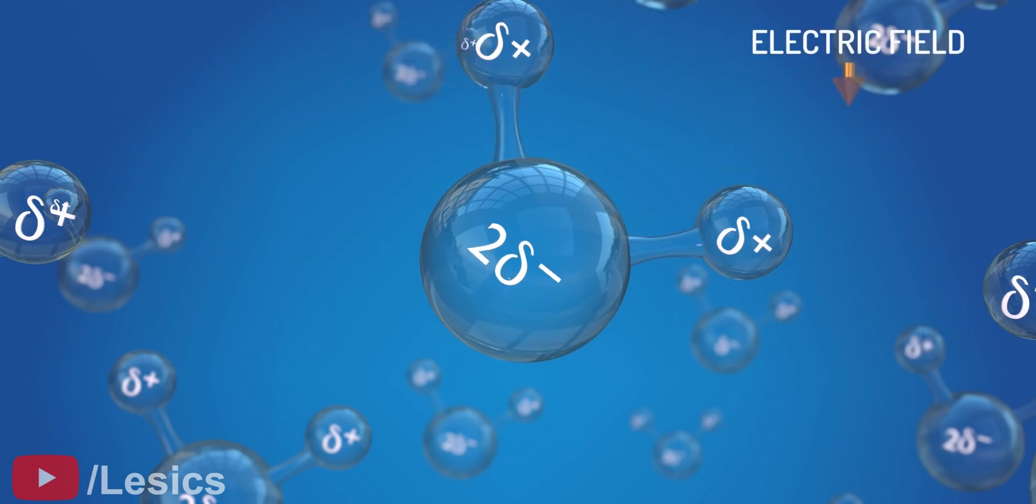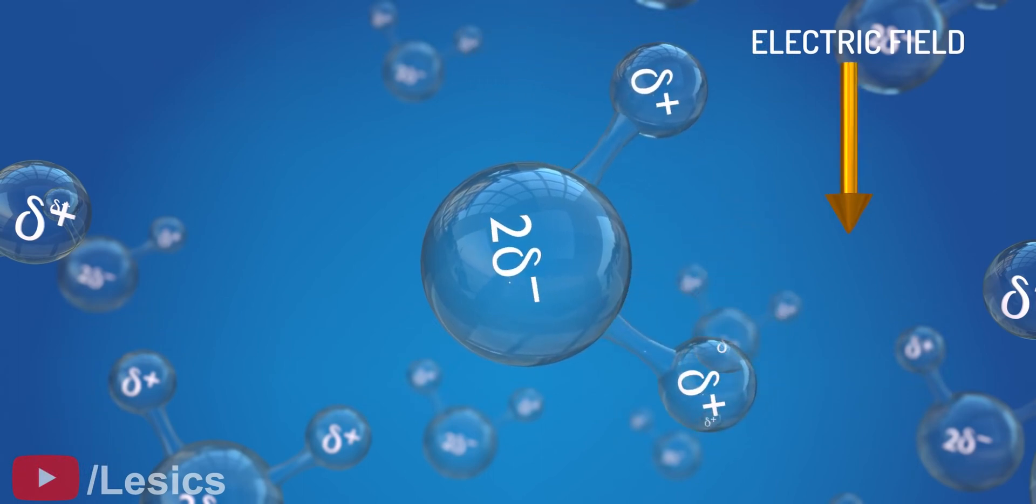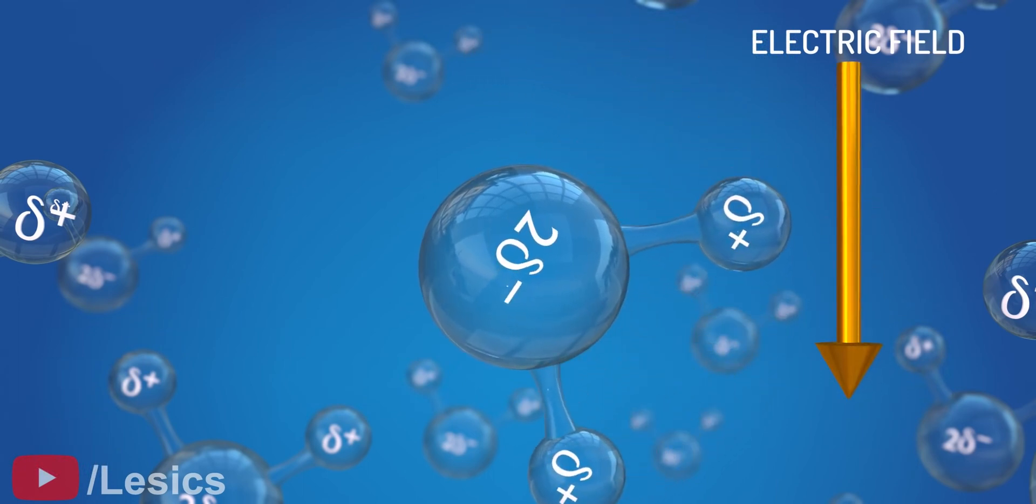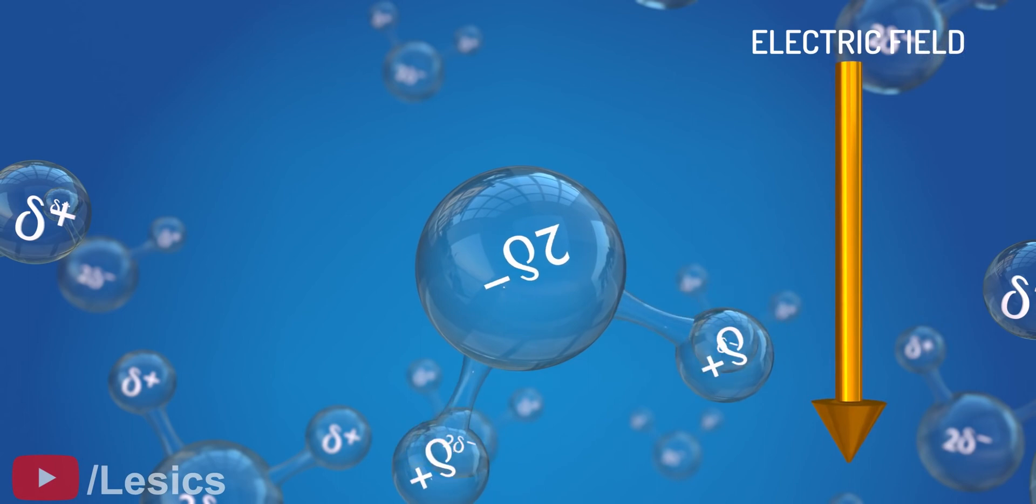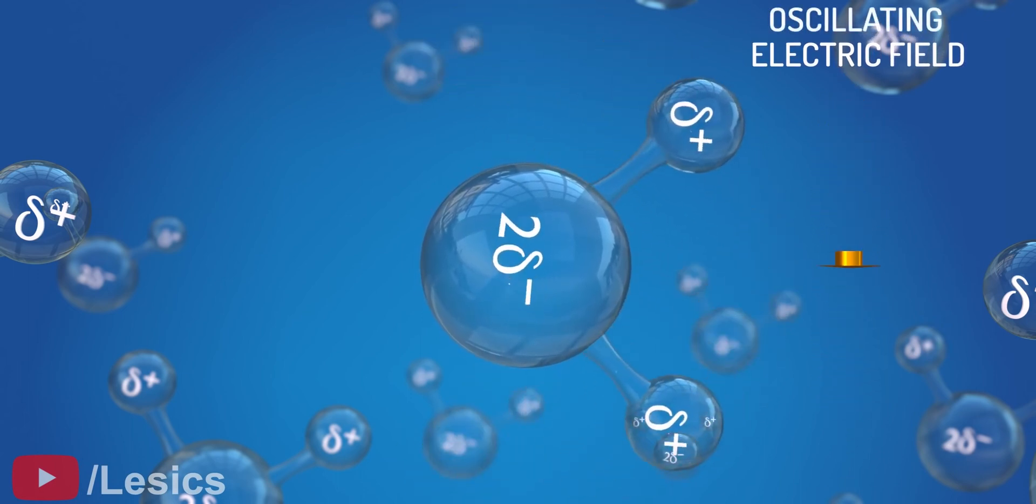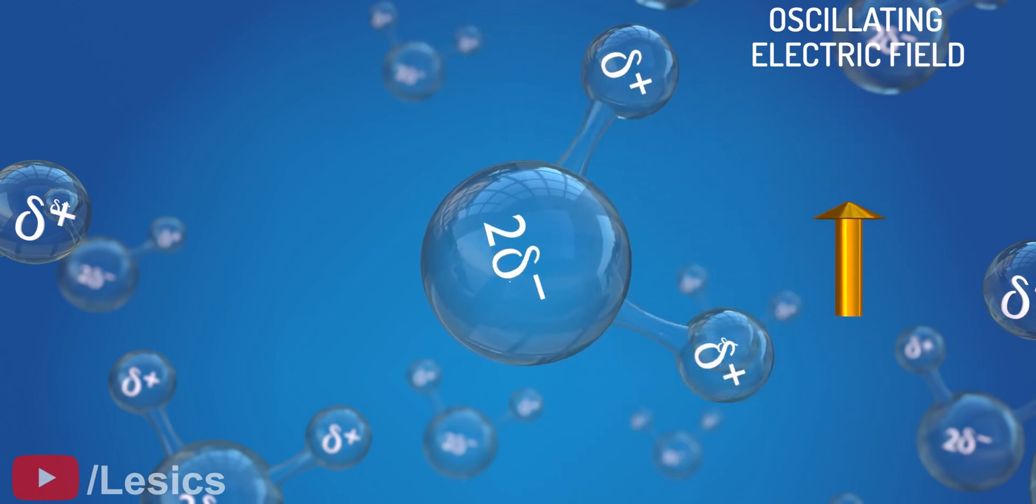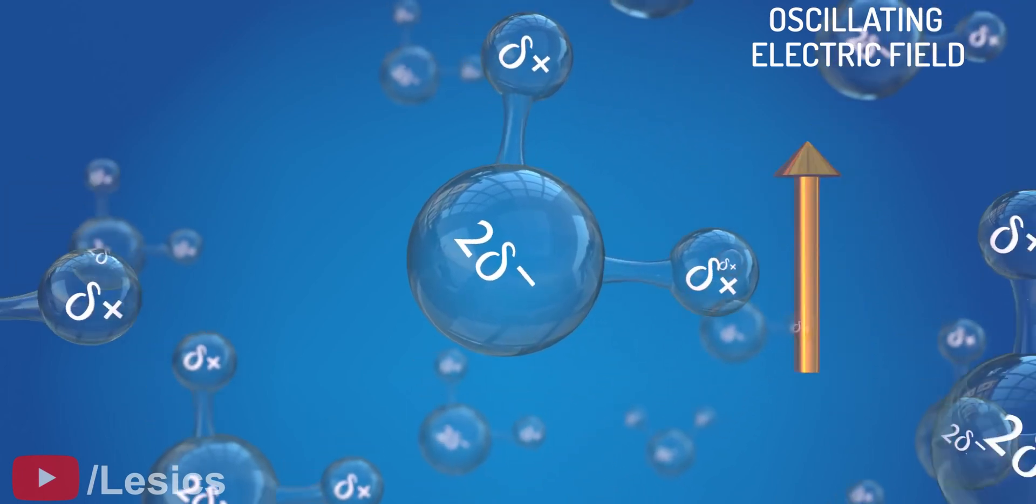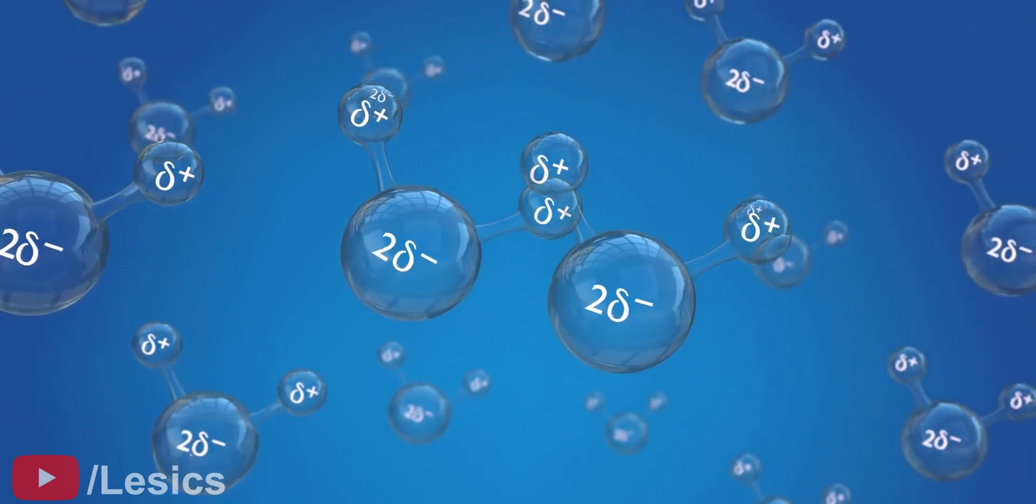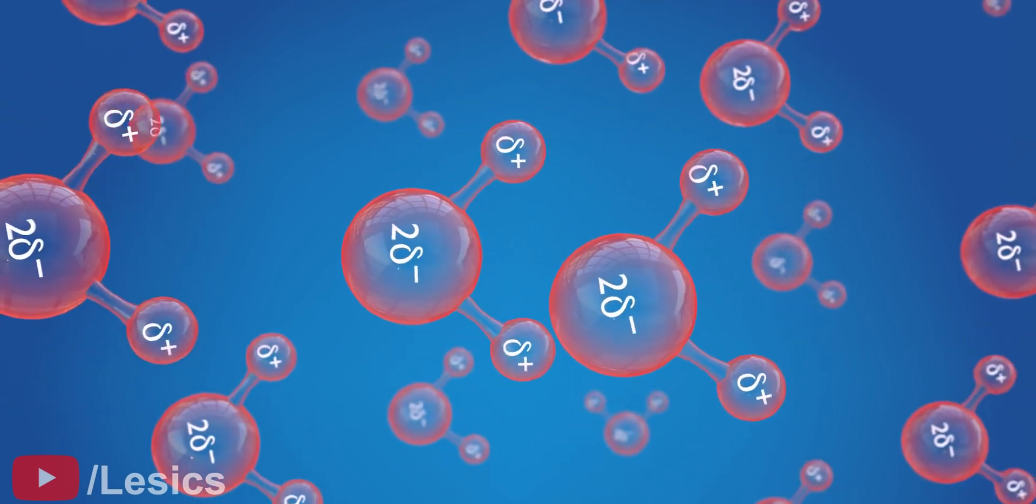When an electric field is applied to the water molecule, it starts to rotate due to the torque produced on the dipole. Since in electromagnetic waves the electric field oscillates continually, the water molecules will keep on oscillating. Due to this oscillating rotation, the molecules rub against each other and produce friction and heat in the food.